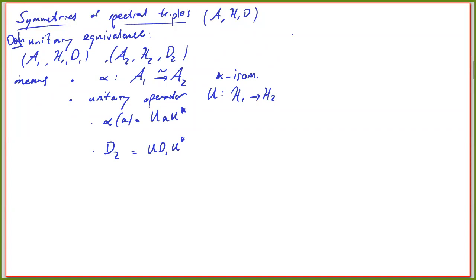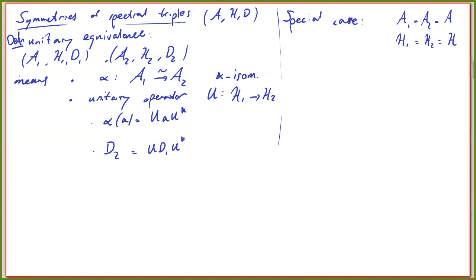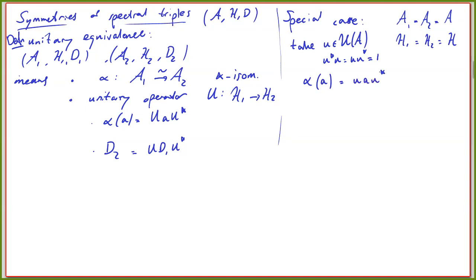A good special case to think about is when A₁ = A₂ = A and H₁ = H₂ = H, and you take unitaries in the algebra to do the intertwining. Take a unitary U in the algebra with U*U = 1. Then you see that α(A) = U A U*. This is a special type of automorphism called an inner automorphism. It means there is a map from the unitaries to the inner automorphisms of A — which form a normal subgroup of the full automorphism group of A.